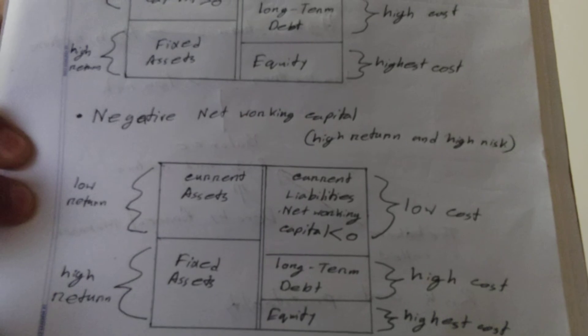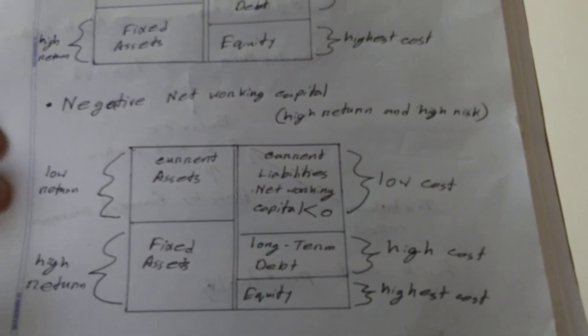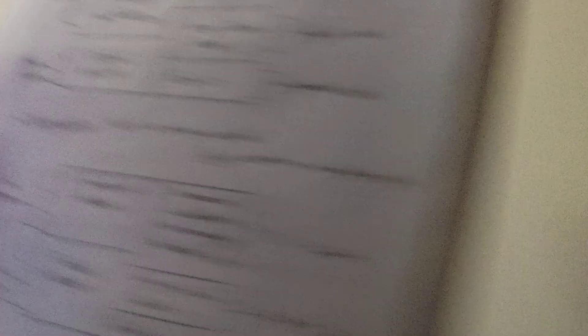The long-term debt has high cost and equity has the highest cost. This diagram is basically essential, and let me explain it a bit easier to you.